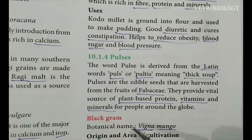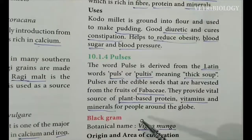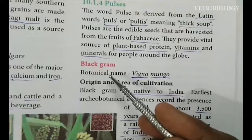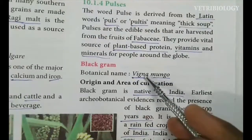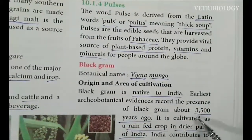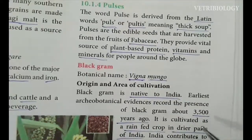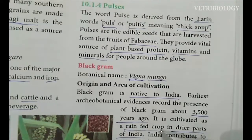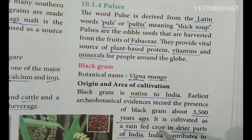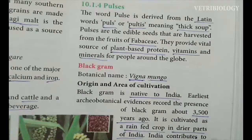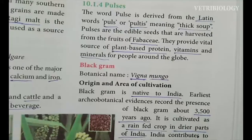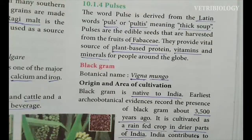The three pulses we are going to learn about — black gram, red gram and green gram — were originated in India. Black gram, known as ulundu, has the botanical name Vigna mungo. It was cultivated 3,500 years ago in India. It is cultivated as a rain-fed crop in drier parts of India. 80% of the global production of black gram is contributed from India. Uttar Pradesh, Chhattisgarh and Karnataka are the important states growing black gram.